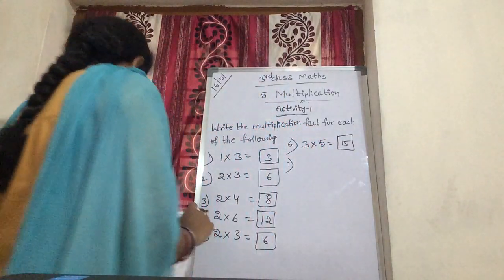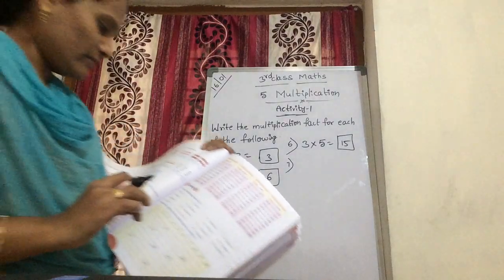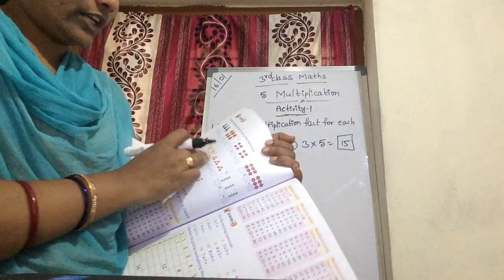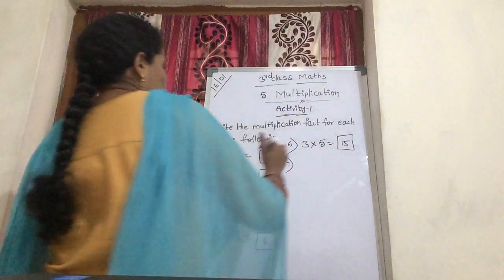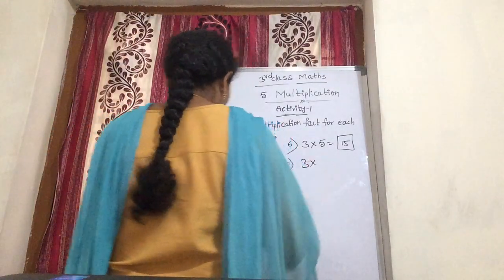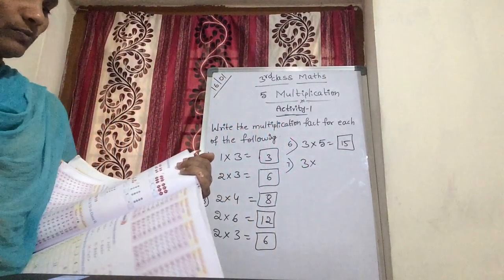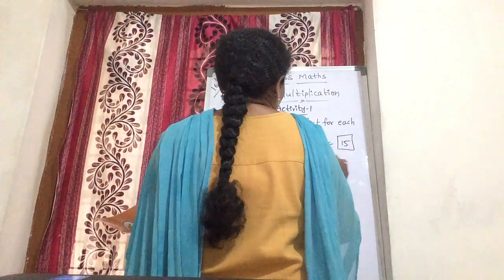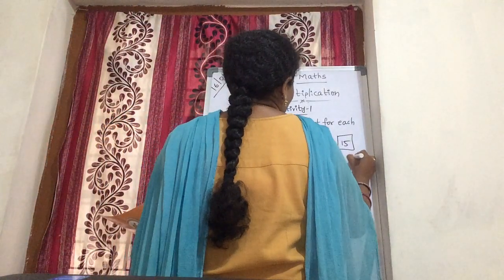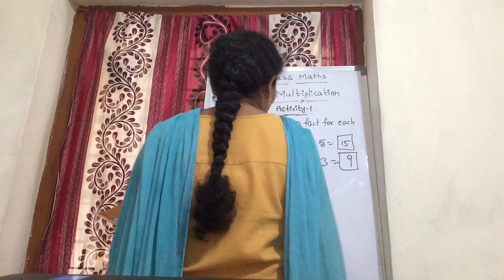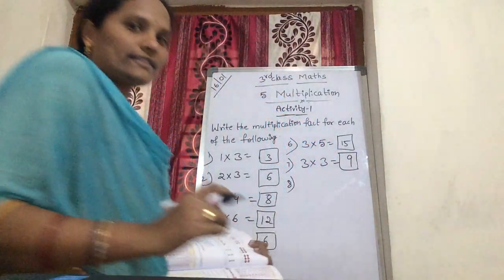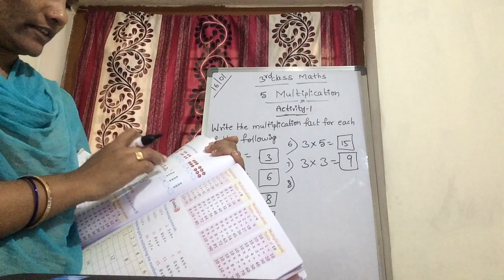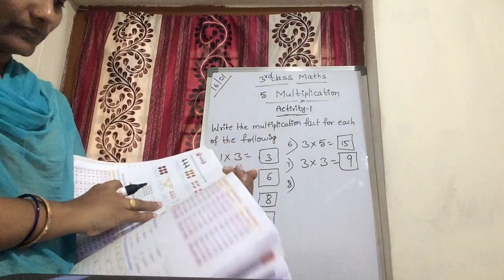Now, next one. Here, gift packets. How many groups of gift packets? 1, 2, 3 — three groups of gift packets. Each group, how many gift packets? 3. So, 3 threes are 9. Total — 1, 2, 3, 4, 5, 6, 7, 8, 9. Okay, good.